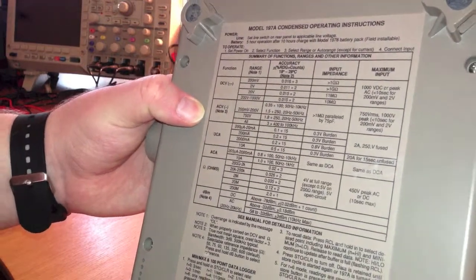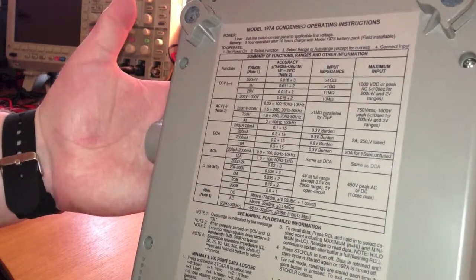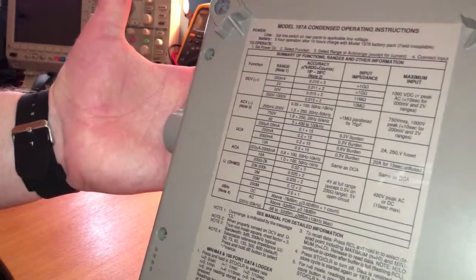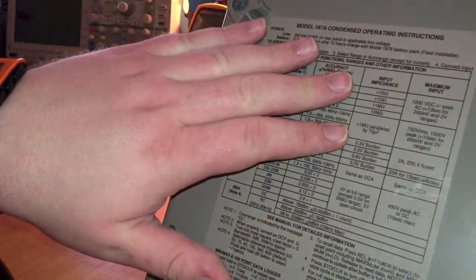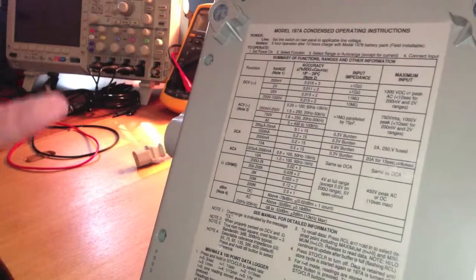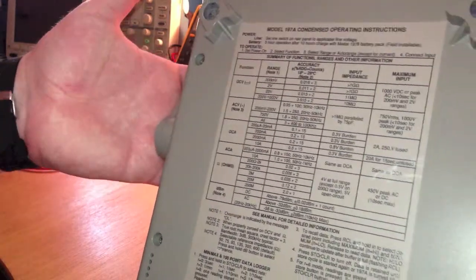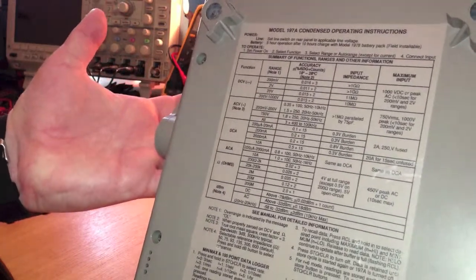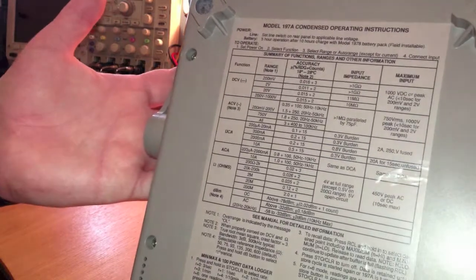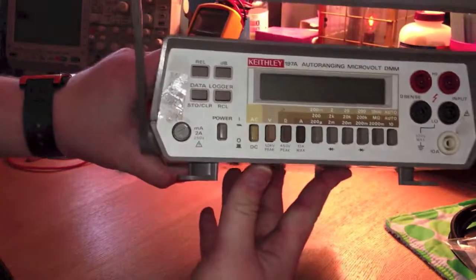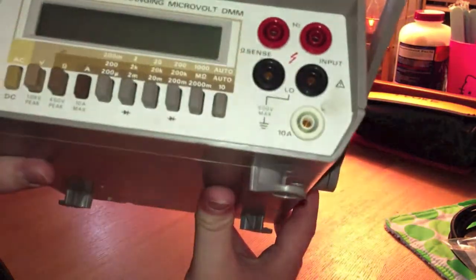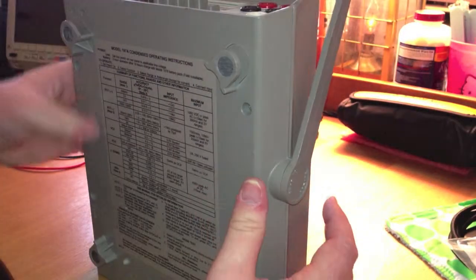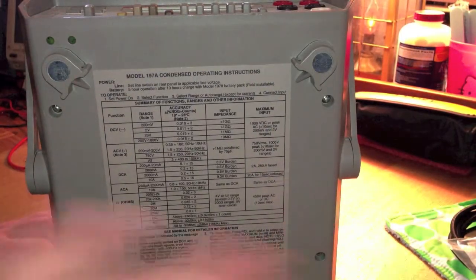You've just basically got a quick reference guide. They call it the condensed operating instructions, which makes me think of condensed soup or something. I don't know, they could have just called it a quick reference. It shows you down here how to use the data logger. You've actually got accuracy specifications. DC voltage range. It's one gigaohm impedance, which is something that you'd expect. Just general how to use. So I thought that was kind of nice, especially as light as this meter is. Considering how old that it is, I was really impressed by the lightweight. I mean, especially considering the accuracy.